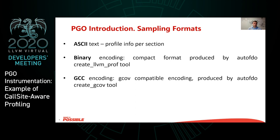In order to store information about program execution, sampling profiling uses several formats. One is a simple text format where we collect information for every function and store information about certain program counters and places in that function that were executed. Another approach supported by LLVM is to use a binary encoding format, which is of course more compact. That format is the main format produced by AutoFDO create LLVM prof. There is also a GCC-compatible encoding where GCOV format is used, and create GCOV is supported as part of AutoFDO to produce such output format.